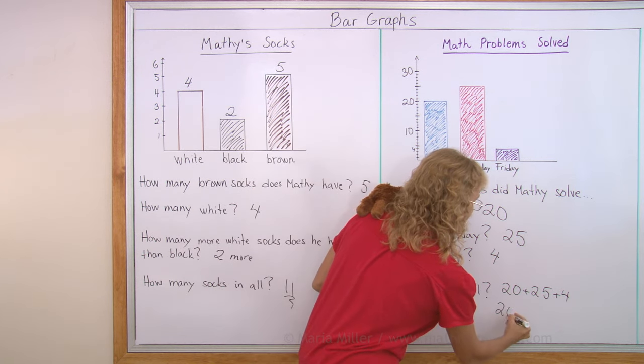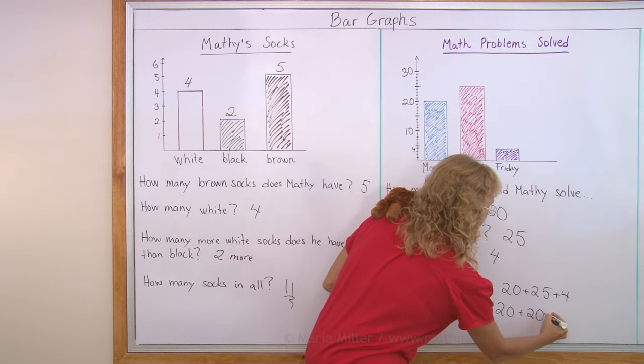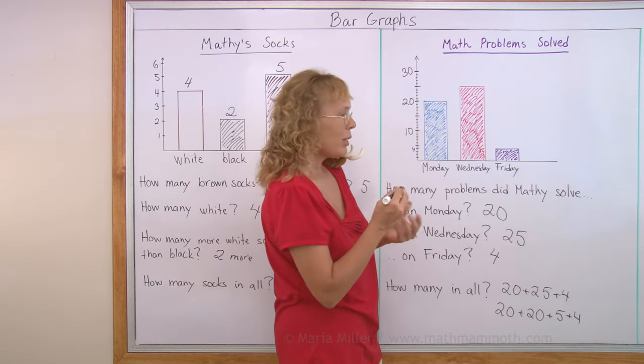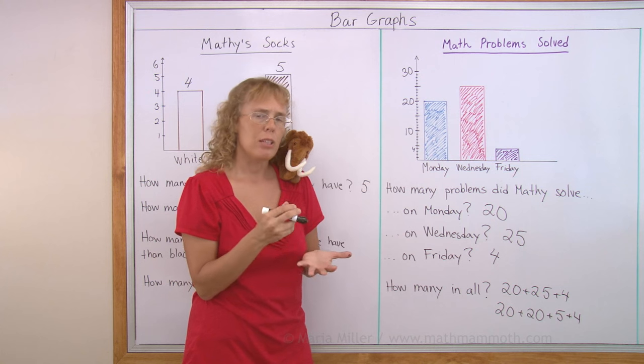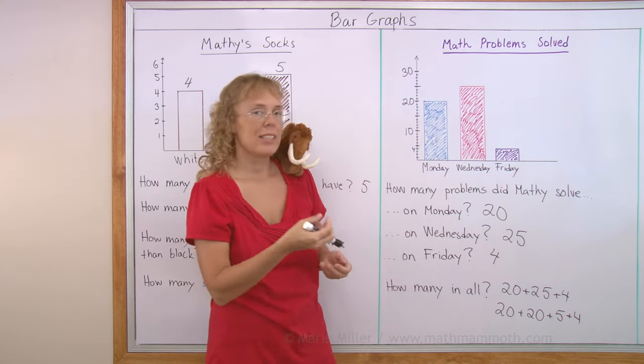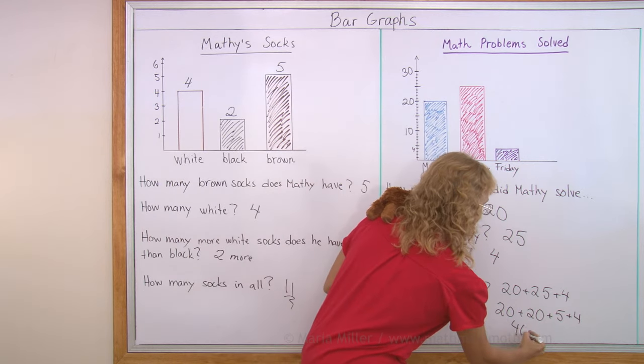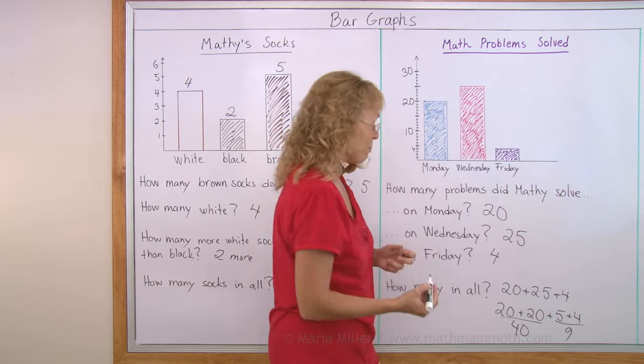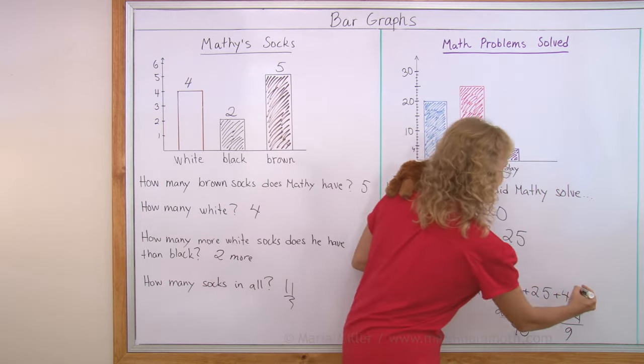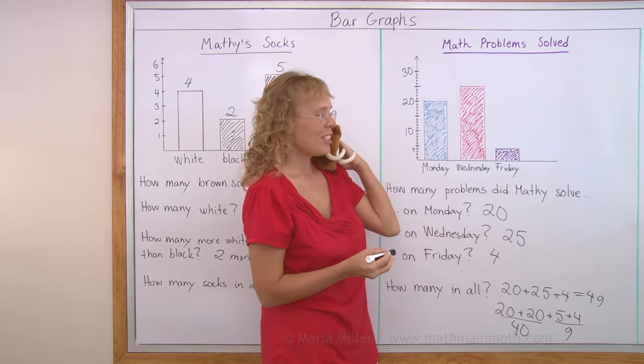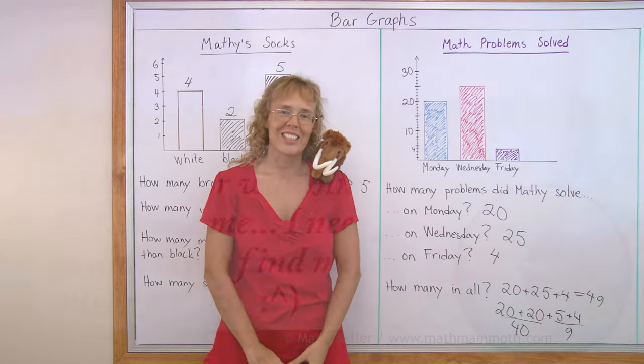Think of the twenty-five as twenty and five. So we would have twenty and twenty and five and four. So now if you had twenty and twenty, that would make forty, right? And then five and four makes nine. So you have forty from these two and nine from these two. That's forty-nine. Yes. We got it solved. Well, thank you, Matthew, for giving us these nice problems. Well done with this lesson.